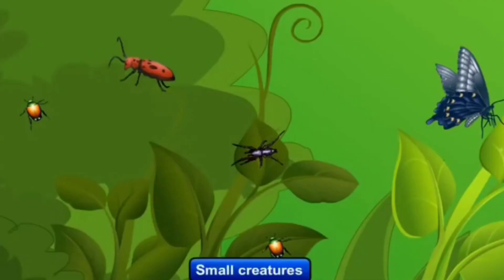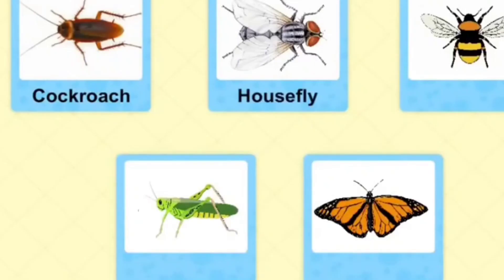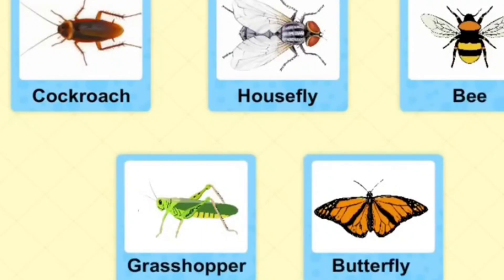Insects are very small creatures. All insects have 6 legs. They usually have 2 pairs of wings. The cockroach, house fly, bee, grasshopper, butterfly are some of the insects.